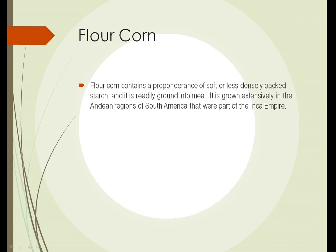Flour corn is the third type of corn, and it has softer or less densely packed starch, so it's very easy to grind into meal. It was grown, and still is, pretty extensively in the mountainous regions of South America that were part of the Inca Empire. Most of the grinding of corn to flour or meal was done by hand, so it was important to have a corn where that process was easier, and flour corn is that kind.